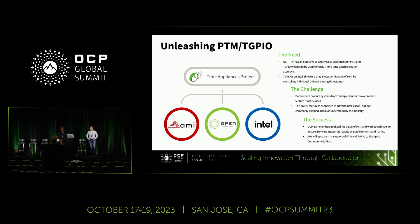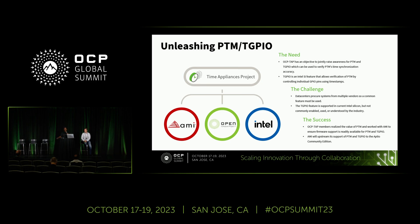Hello everyone, I'm Brian and I work with AMI, a firmware company. So how did AMI get involved in this? It started when we got connected with OCPTAP, with an objective to jointly raise awareness for PTM and TGPIO. TGPIO is an Intel-specific silicon feature for verifying PTM. Some challenges being faced with PTM awareness include data centers using various vendors, a need for a common feature available across all systems and vendors, and the fact that the TGPIO feature, although supported by current Intel silicon, is not commonly enabled, used, or understood by the industry at large.